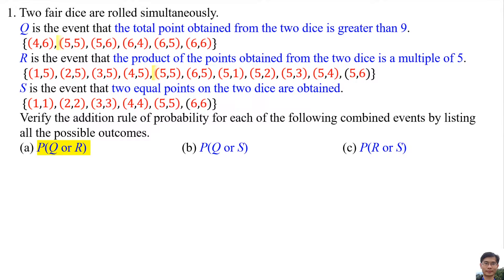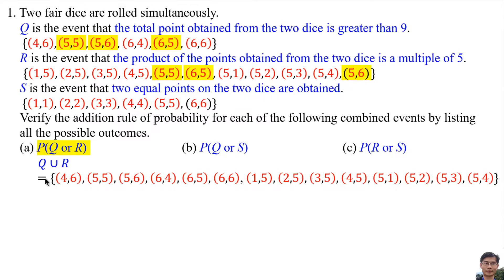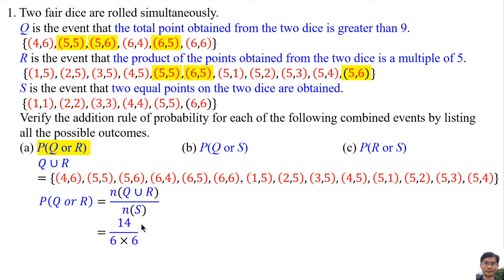For the probability of Q or R: the common elements of Q and R are (5,5), (5,6), and (6,5). Q or R is the union Q ∪ R. To list Q ∪ R, we copy all elements from Q and all elements from R except the common elements (5,5), (5,6), and (6,5). The probability of Q or R is the total elements of Q ∪ R over the total sample space. There are 14 elements in Q ∪ R, and the total sample space is 6 × 6 = 36. So the probability is 14/36 = 7/18.